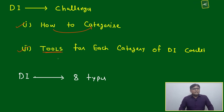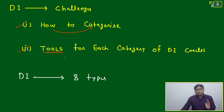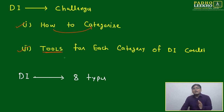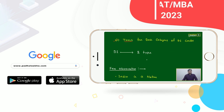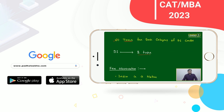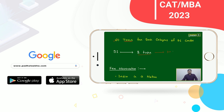So overall, the two major challenges are: categorization of DI caselets, and knowing the tools for each type of DI caselet. We will discuss a total of eight types of DI caselets — these eight types will cover 100% of your DI.